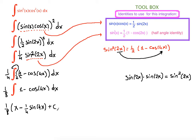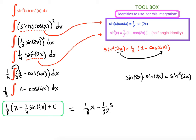You can leave your work here as your answer, or you can distribute one eighth to the inside: one eighth times x is one eighth x, and one eighth times one fourth is one thirty-second sine of 4x plus C. This is your final answer. Alright, this is the end of the solution.